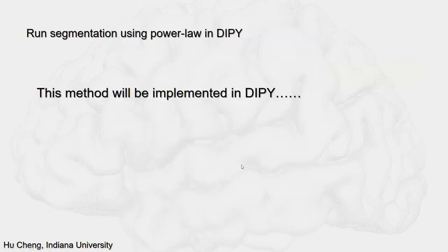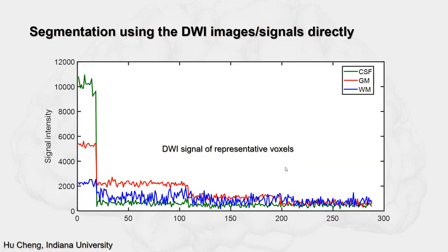This method will be implemented in DIPI, so stay tuned. Now let's switch gears to the second approach for brain segmentation: using DWI images or signals directly.